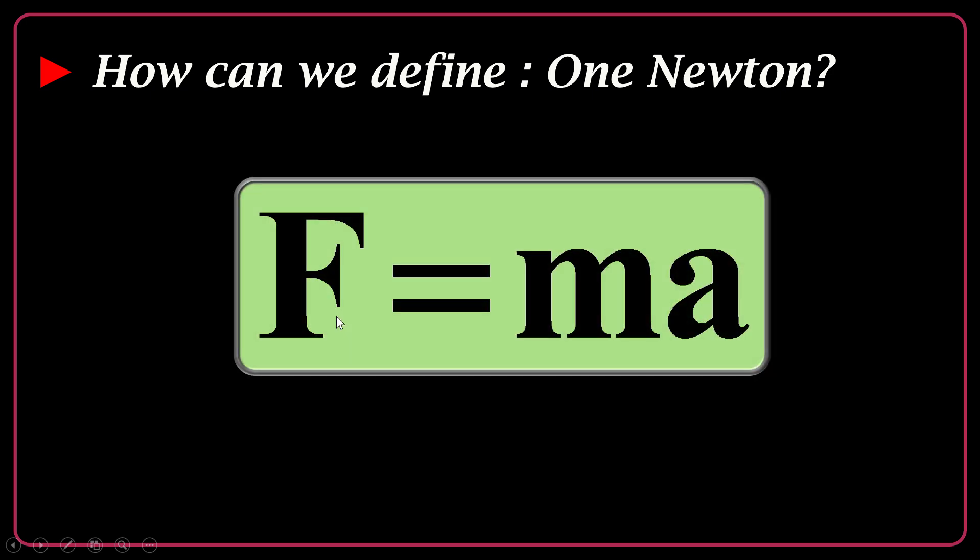How can we define one newton of force? Let's say again F equals MA. Let's say a mass of one kilogram is acted by a force of one newton. So necessarily we expect the acceleration to be one meter per second square because one multiplied by one will be one. So one newton is a force if it acts on an object of a mass one kilogram, it will accelerate for one meter per second square.